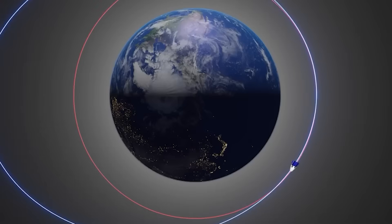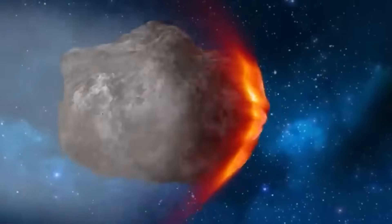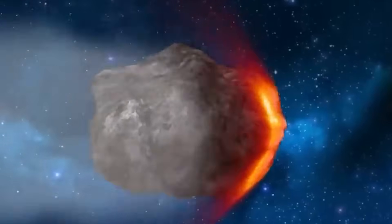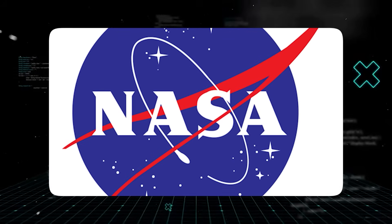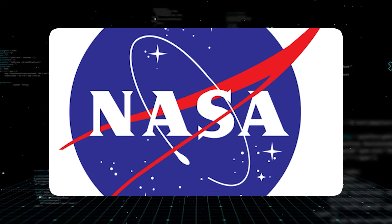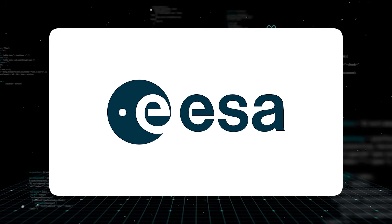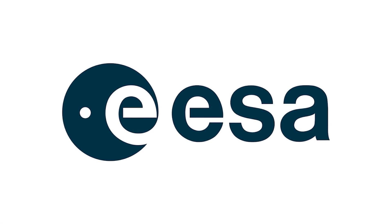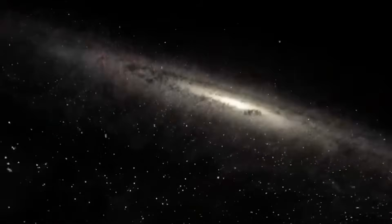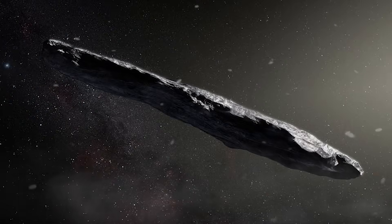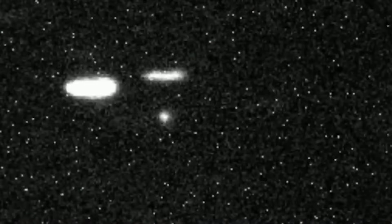The object veered slightly off its projected arc, aligning instead with a completely new vector, one that leads it closer to Earth's orbital plane. To some, it was a glitch. But to mission analysts at the Deep Space Network, the conclusion was more alarming. Three-Eye Atlas had responded either to our presence, or to something else, but it changed direction, with the kind of timing and finesse that implied decision making. And that word, decision, is what sparked late-night emergency meetings at NASA, ESA, and private think tanks around the world. This wasn't random, it was surgical, and it confirmed a possibility long feared.